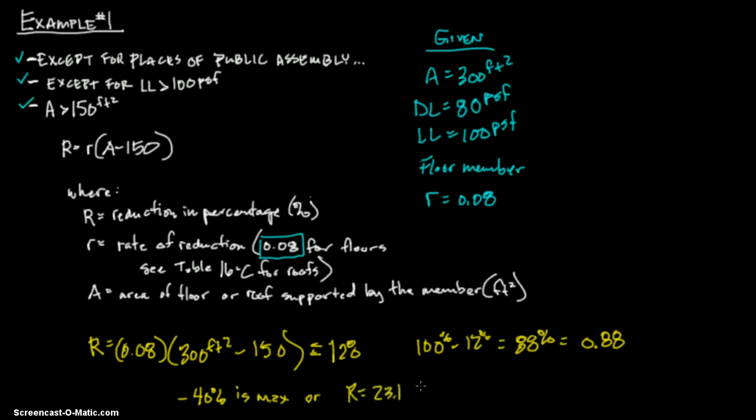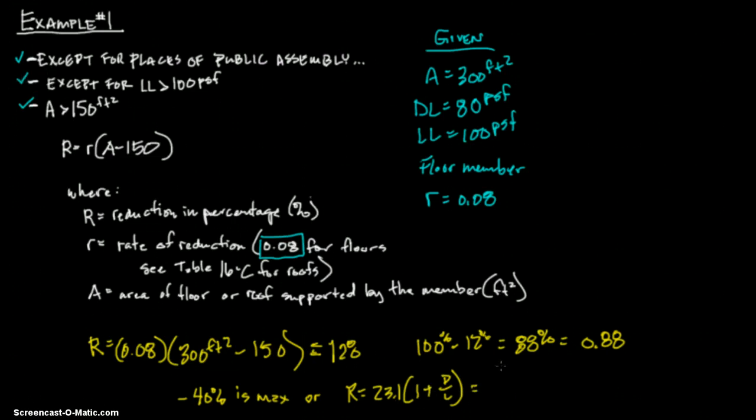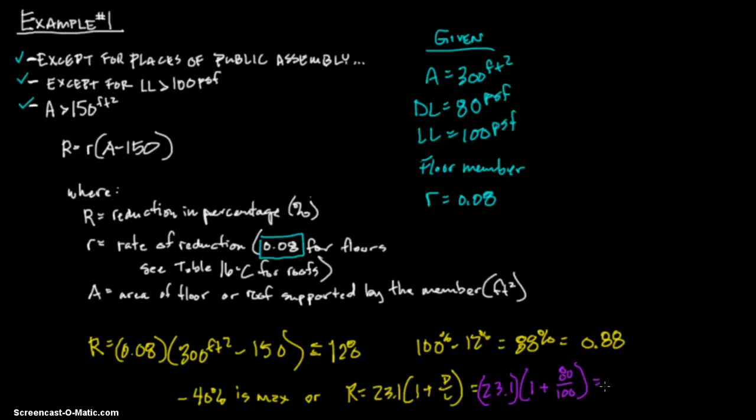What else does it say? It can't be greater than 40 using our criteria, or R equals 23.1 times 1 plus D over L. So it can't be greater than this either. This is your max reduction. Let's go ahead and solve this. 23.1, I'll put this in parentheses, times 1 plus your dead load over your live load. Your dead load is 80, your live load is 100, so that's going to be 0.8. 23.1 times 1 plus 80 over 100 equals 41.58%. So as you can see, this is still controlling.